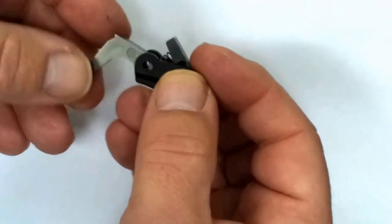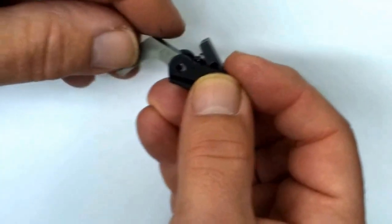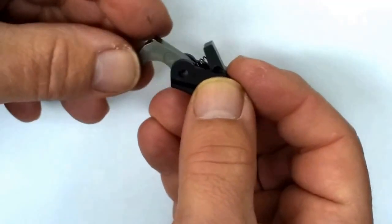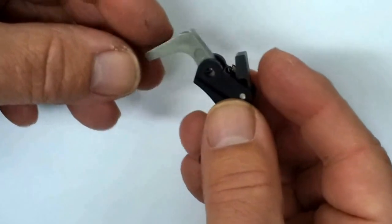That holds the disconnector in place, but now the problem is that the sear can still flop out, and if it's really bad you might even lose that spring. So we'd like to hold it together while we're inserting this assembly into the housing.